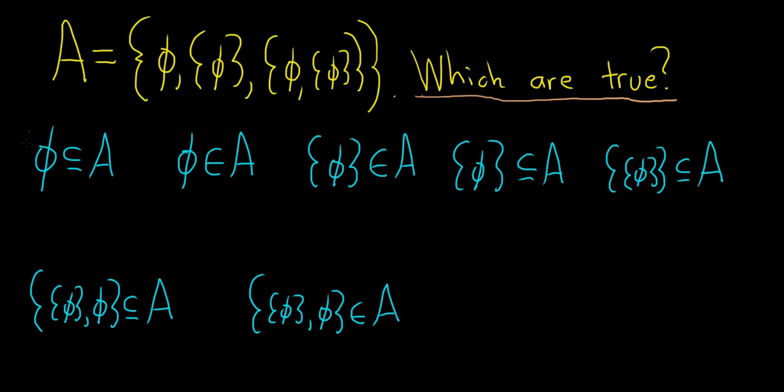So the first statement here is telling us that the empty set is a subset of A and that's always true because the empty set is a subset of every set. So this is true, always true for any set, it doesn't even matter that it's this one, it's always true.